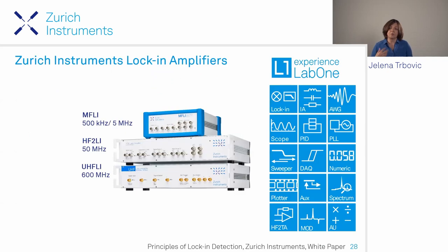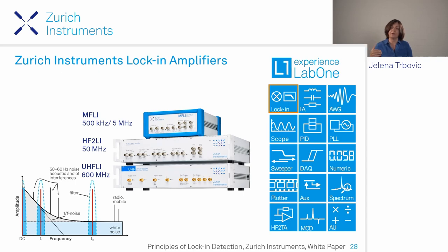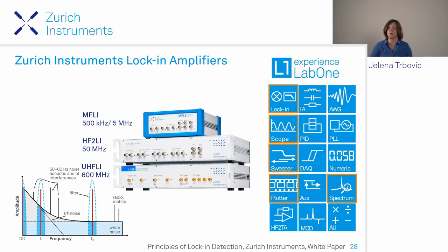The best way to tackle these measurements is to use lock-in amplifiers, which can extract very small signals buried in noise and give amplitude and phase with respect to a reference. Zurich Instruments has three lock-in amplifiers covering a wide frequency range, each digital with multiple lock-in measurement capabilities, plus tools like scope for noise measurement, sweeper, plotter, and spectrum analyzer.